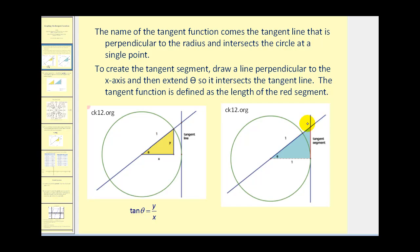The tangent function is defined as the length of this red segment, the length of this tangent segment. Now you probably also remember that tangent theta is defined by y over x where the point with coordinates x, y would be where the terminal side of this angle intersects the unit circle.